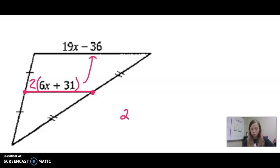So 2 times 6x plus 31 equals 19x minus 36.